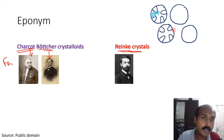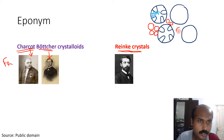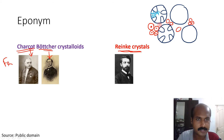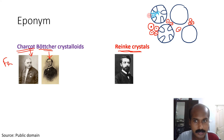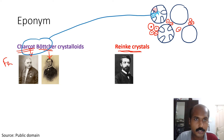Between the seminiferous tubules all the spaces are called the interstitium. Within the interstitium you have clumps of cells — I am drawing these a little large to show the location of the crystals. These cells are called interstitial cells because they are located in the interstitium between the seminiferous tubules — these are the interstitial cells of Leydig, or Leydig cells.